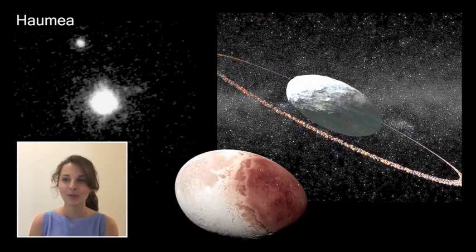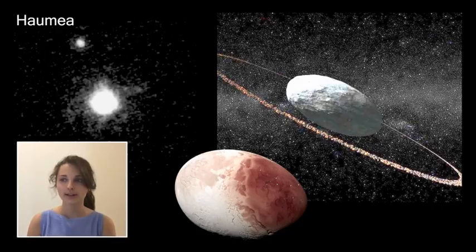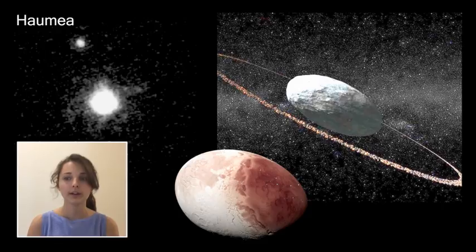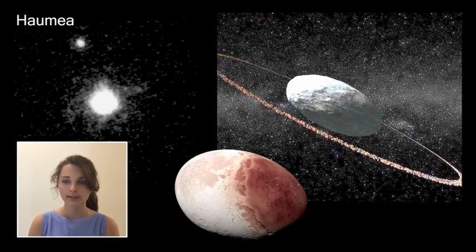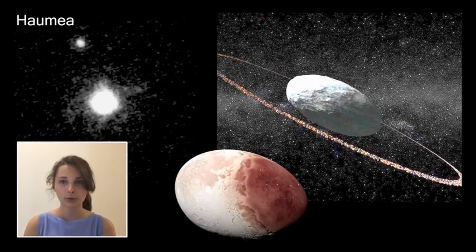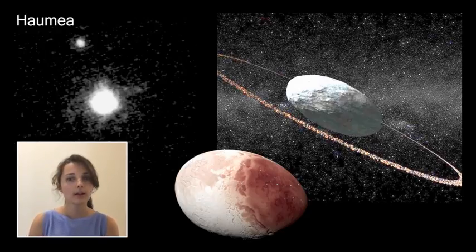The next dwarf planet is Haumea. Haumea is notably long, elliptically shaped, and rapidly rotating, with a rotational period of only four hours. It is the fastest rotating object that has settled to a hydrostatic equilibrium, meaning it has a static distribution of differentiated layers in its interior based on layer density — a requisite for classification as a dwarf planet. Haumea's relatively high albedo suggests it is likely covered by water ice and may have formed as a result of a collision between larger trans-Neptunian objects. Haumea has a debris ring of radius 2,300 kilometers — the first discovered debris ring for a trans-Neptunian object — and its high density may indicate silicon materials in its core. Haumea has two moons.